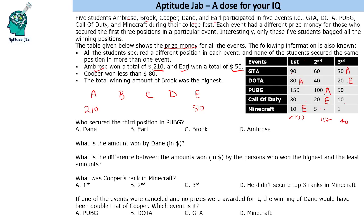Next, Cooper won less than $80. So Cooper cannot be $90 or $150 — Cooper has to be $30 in that event. It is also given that Brook was the highest winner. If we assign Brook a certain slot here, Brook cannot exceed $210 from that position. B has to be greater than $210, so Brook must get $150 in one event, making the other person in that slot Damian. So we find: Brook gets $150 and the remaining slot goes to Damian.